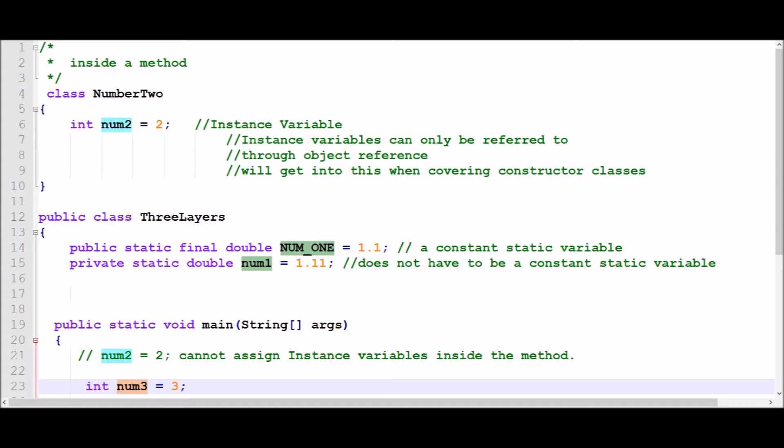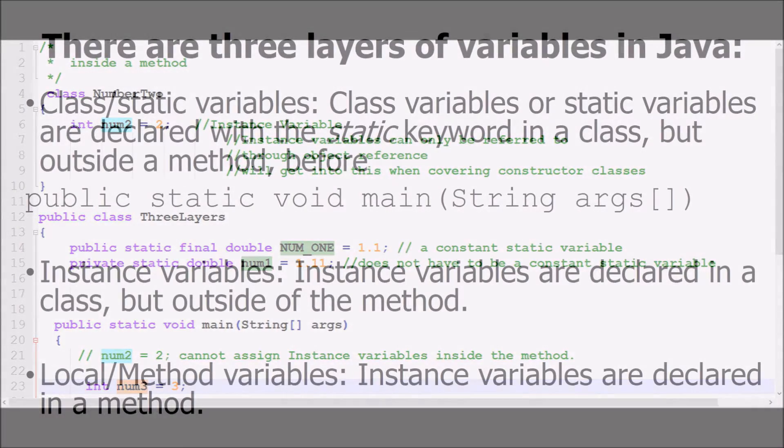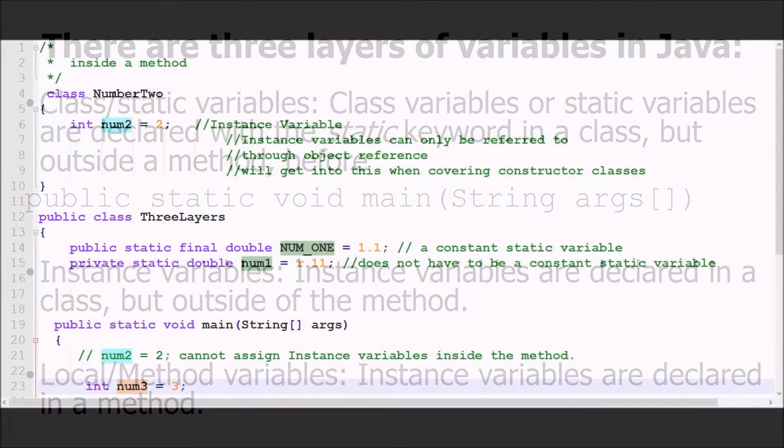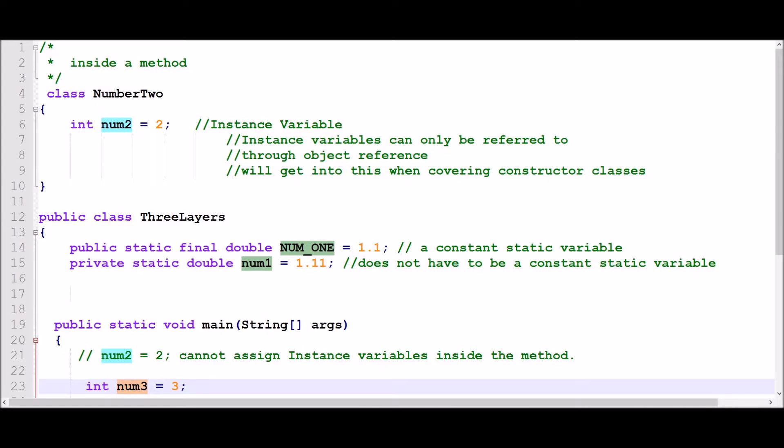Number one is the static variable or class variable. As has been mentioned before, the class or static variables will be shared with all objects of that class. Static variables are initialized only once at the start of the program's execution. All instances or objects of this class will have the same static variables in common.